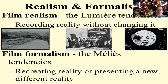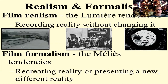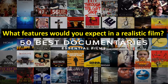Our first formalist film, which we'll talk about more in class today, is from Melies, and its idea of tendencies to recreate reality or present a new different reality — like we see in the Star Wars ship behind me, when the Millennium Falcon was me driving with my good friend Chewie. So when we talk about realism, what features would you expect to see in a realist film? What would be the tendencies of something closer and closer to realism?